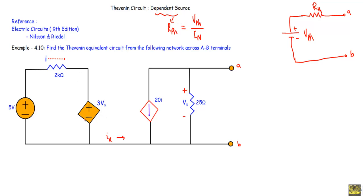Now look at this circuit — it is somewhat different. This circuit contains two dependent sources: 3VX and 20I. I is the current flowing through this 2 kΩ resistor, where VX is the voltage across this 25 Ω resistor. We can divide this circuit into two portions: the left portion and the right portion.